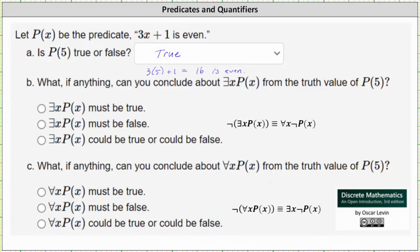And now let's consider b. What, if anything, can you conclude about there exists x such that P of x is true, meaning there exists x such that 3x plus 1 is even, from the truth value of P of 5?